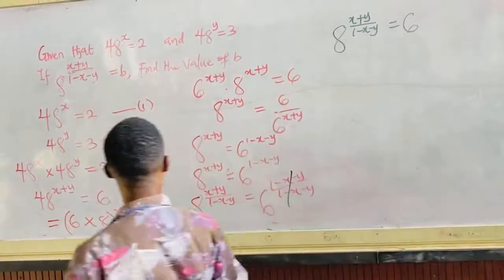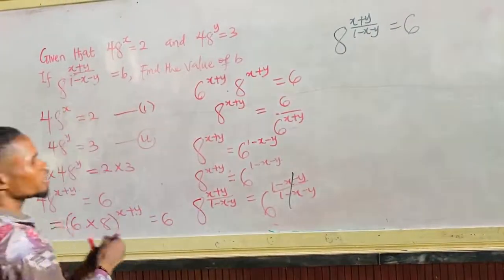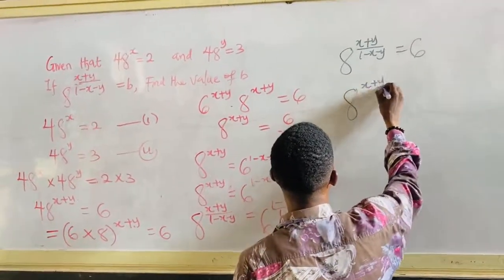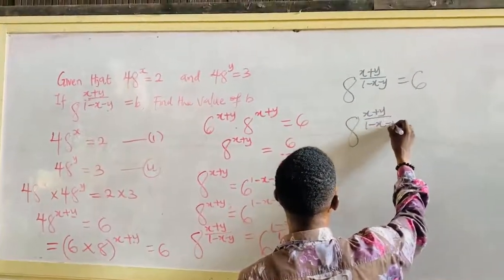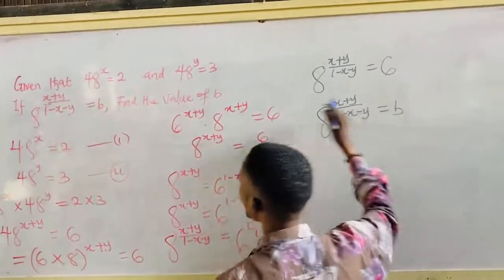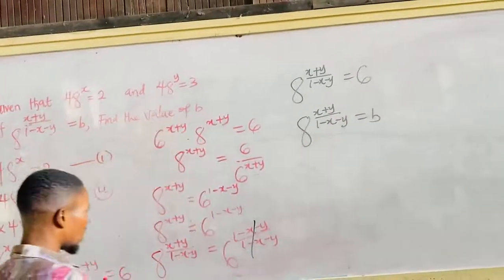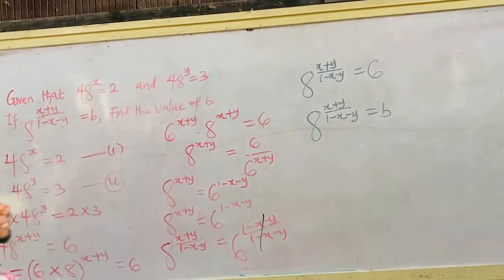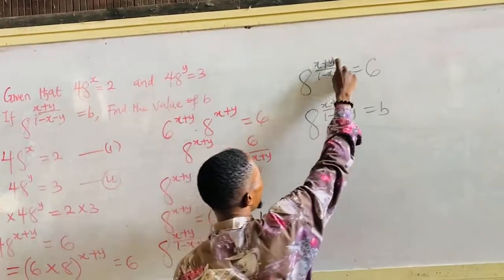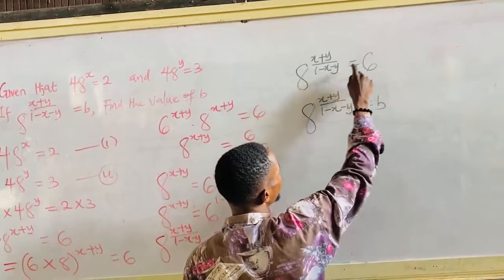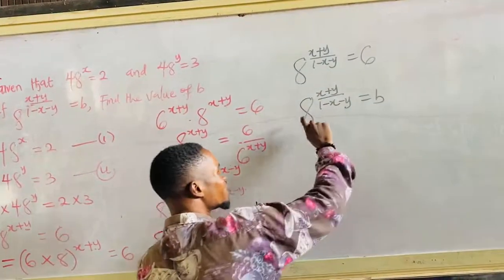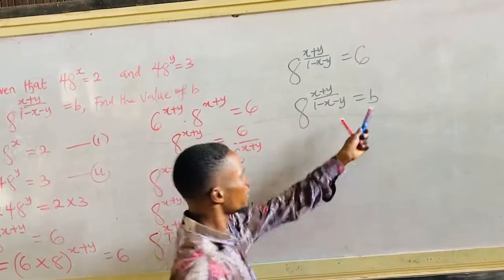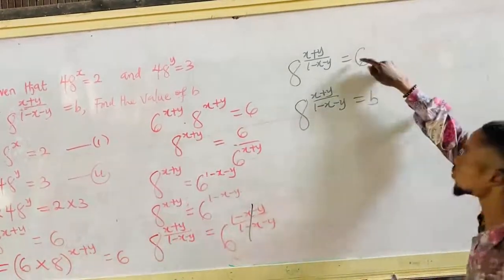Now the question says if 8 raised to the power of x plus y all over 1 minus x minus y is b, find the value of b. From our two equations we conclude that 8 raised to the power of x plus y all over 1 minus x minus y equals 6. Therefore b is equal to 6.